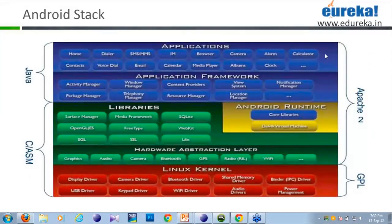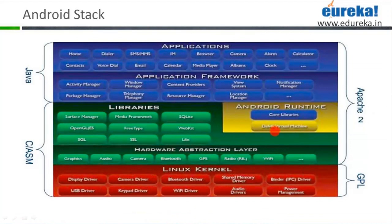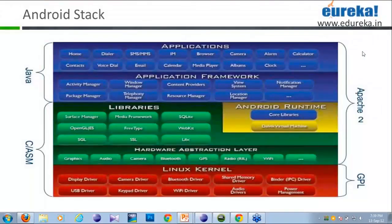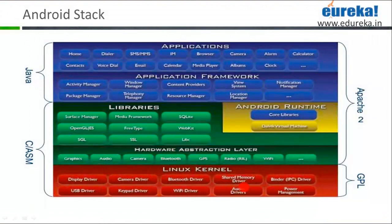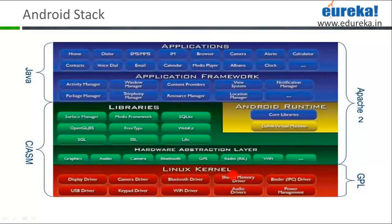When we talk about Android application development, we have an Android stack divided into five layers. At the base is the Linux kernel, above that is the Hardware Abstraction Layer, then the various libraries and Android runtime, then the application framework, and finally the applications. The Linux kernel is the base of the stack and includes memory management, security settings, power management software, and hardware drivers.